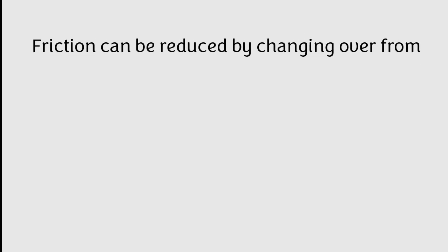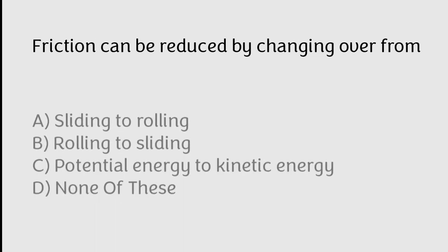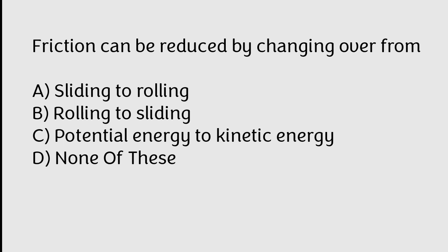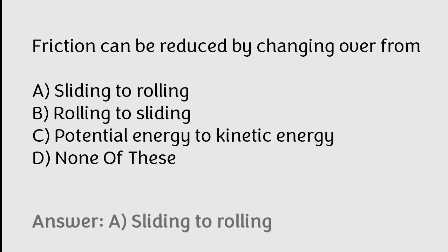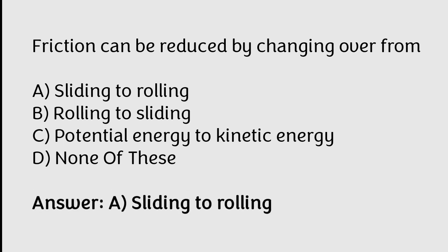Friction can be reduced by changing over from: sliding to rolling, rolling to sliding, potential energy to kinetic energy, none of these. The correct answer is Option A. Friction can be reduced by changing over from sliding to rolling.